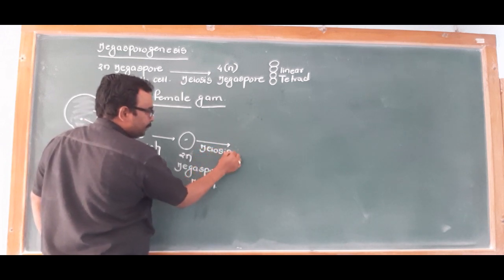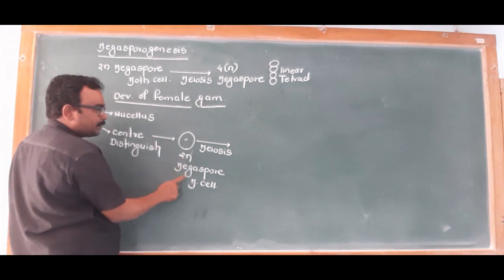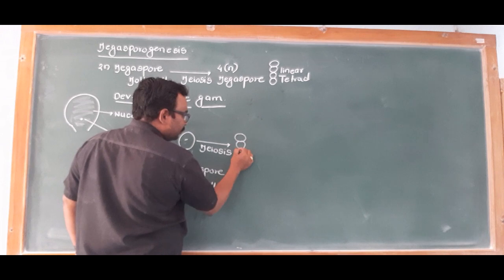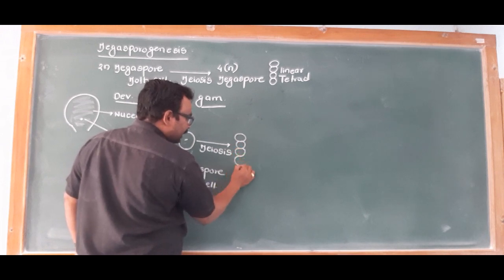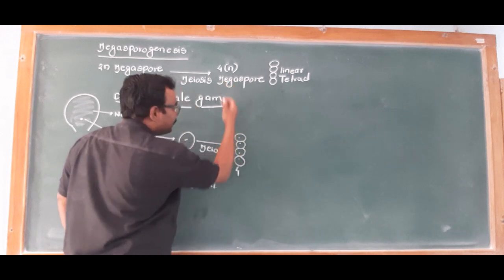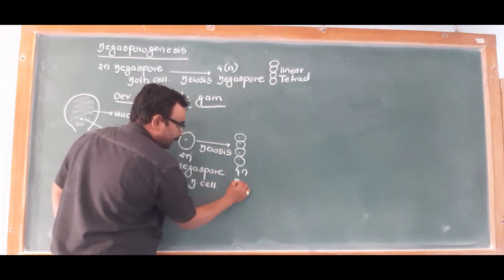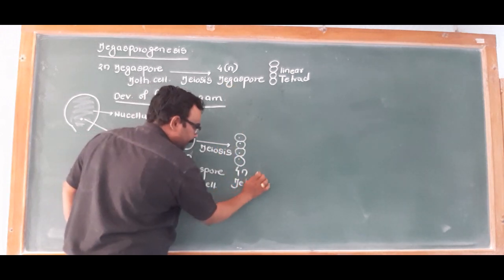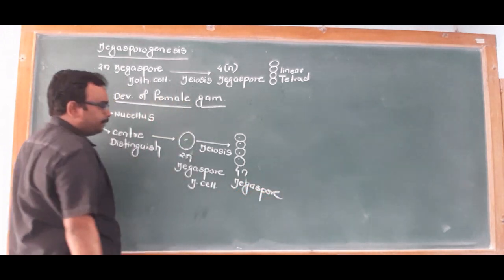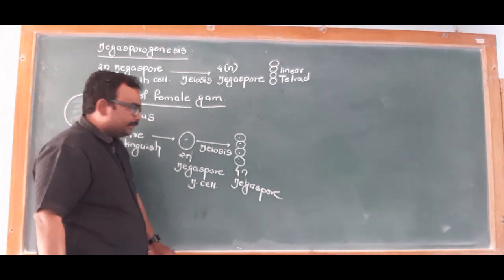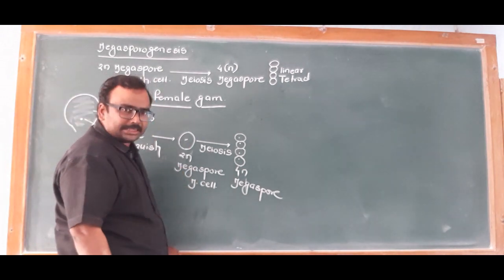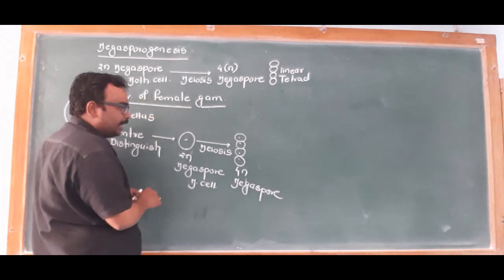The process of meiosis acts on the diploid megaspore mother cell, resulting in the formation of 4 haploid megaspores.